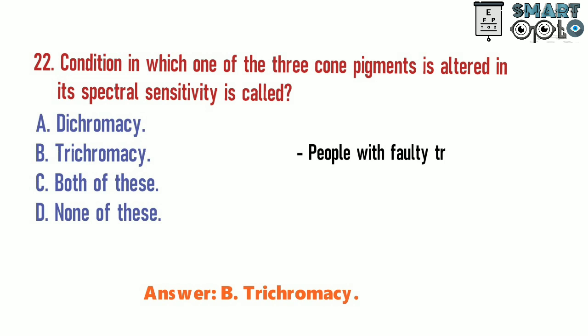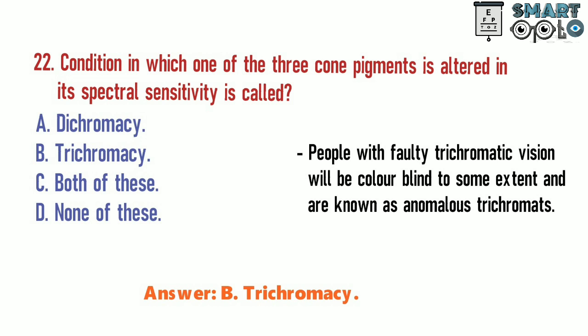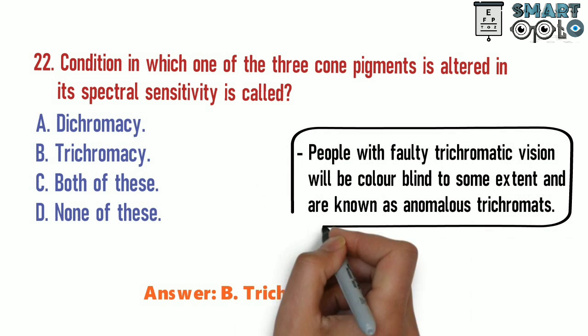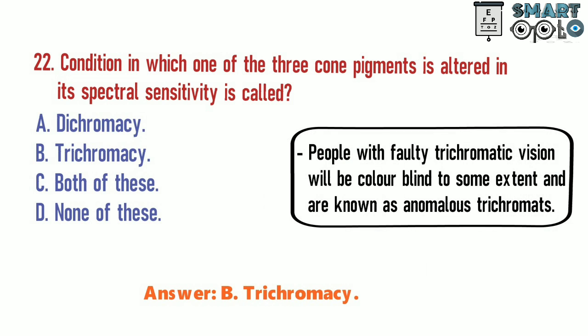People with faulty trichromatic vision will be colorblind to some extent and are known as anomalous trichromats.